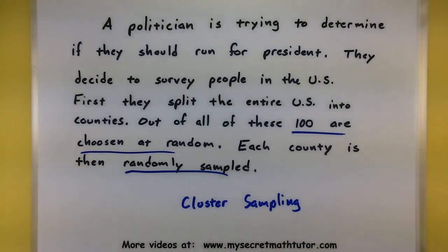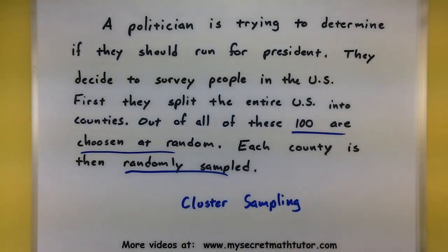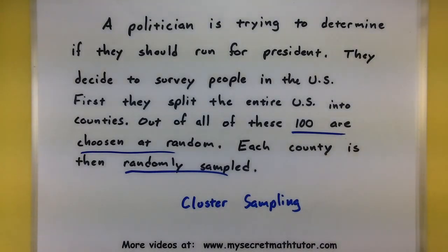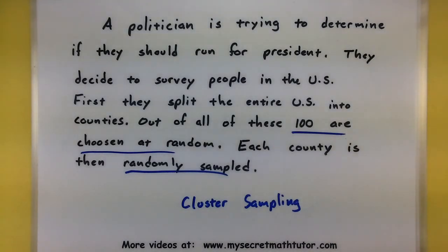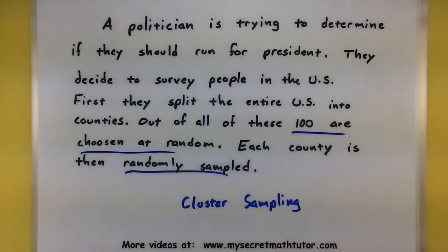We can see cluster sampling because they're first splitting into clusters, randomly choosing a portion of those clusters, and then randomly sampling within each cluster. Hopefully these examples help you wrap your mind around these different types of sampling — there are many different types. Definitely look for those little differences among each one, whether they're breaking things into groups and where randomness is playing a part. Thank you for watching My Secret Math Tutor.